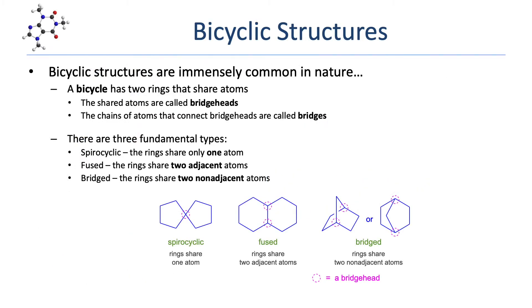A bicyclic compound has two rings that share atoms. Bicyclic compounds are extremely common in nature and represent many of the most important organic compounds. The shared atoms are called bridgeheads, and the chains of atoms that connect them are called bridges.